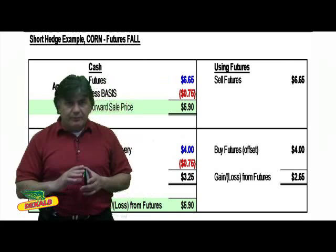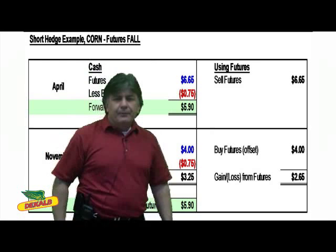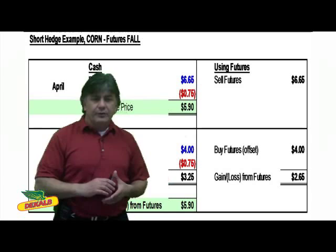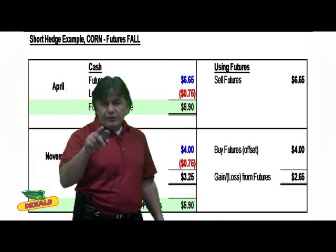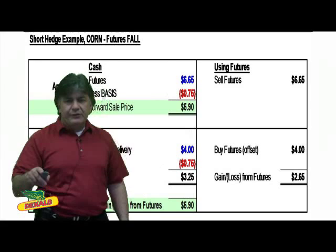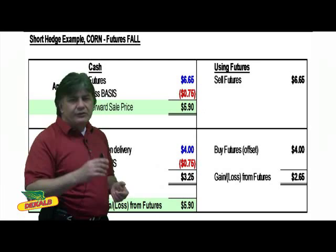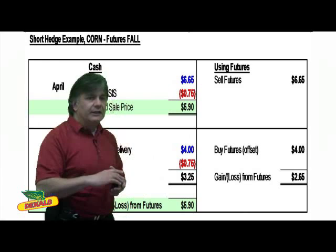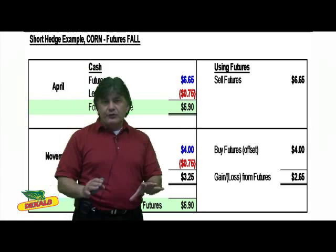Once that's executed by the broker — and we talked about brokers and commodity accounts in past videos — by the time we get to November, the price of corn falls to $4 a bushel. Basis stays the same, so we get to $3.25. As cash has fallen, so have futures, offsetting the loss in the cash market. You still get a similar price of $5.90 that you would have locked in physically back in April.